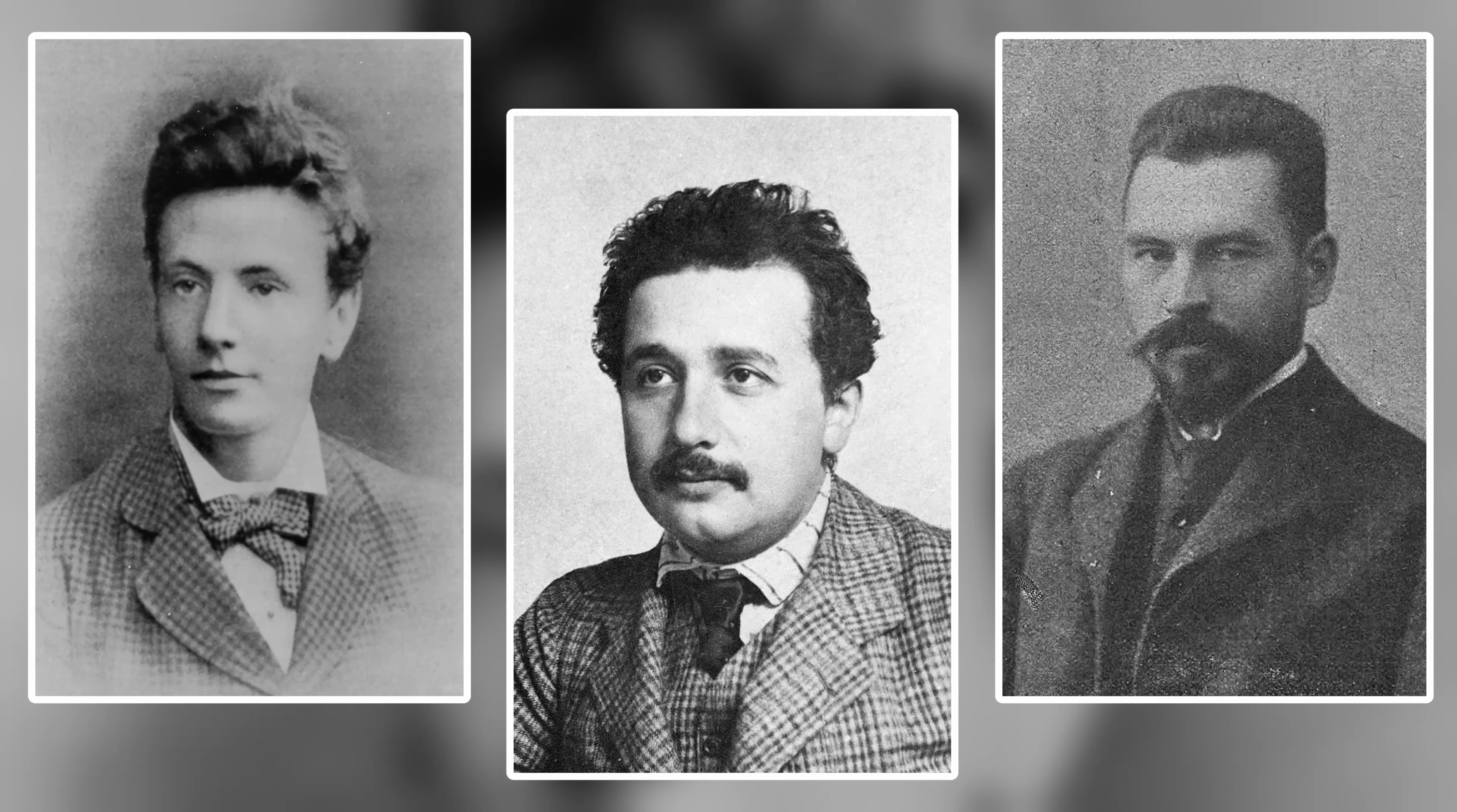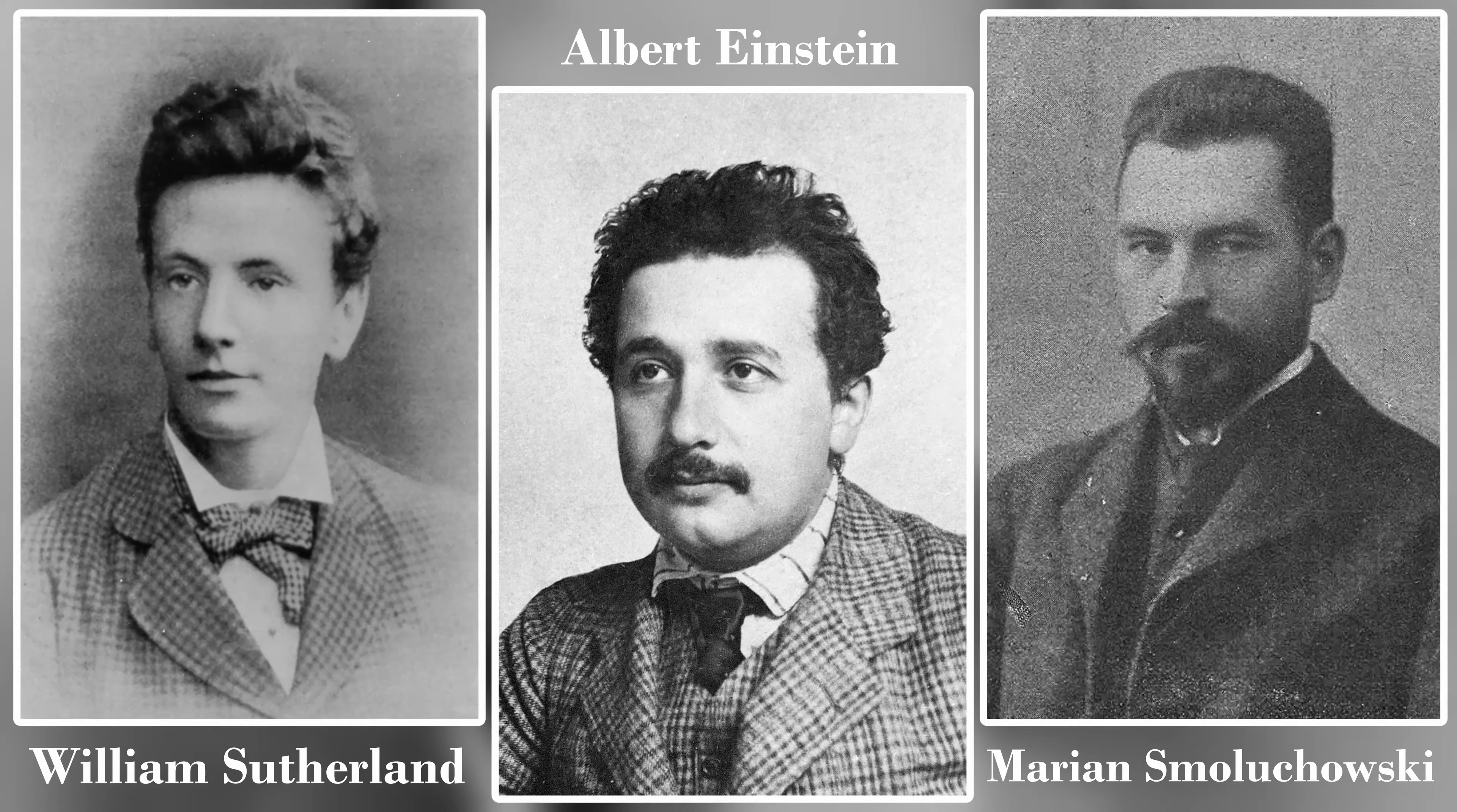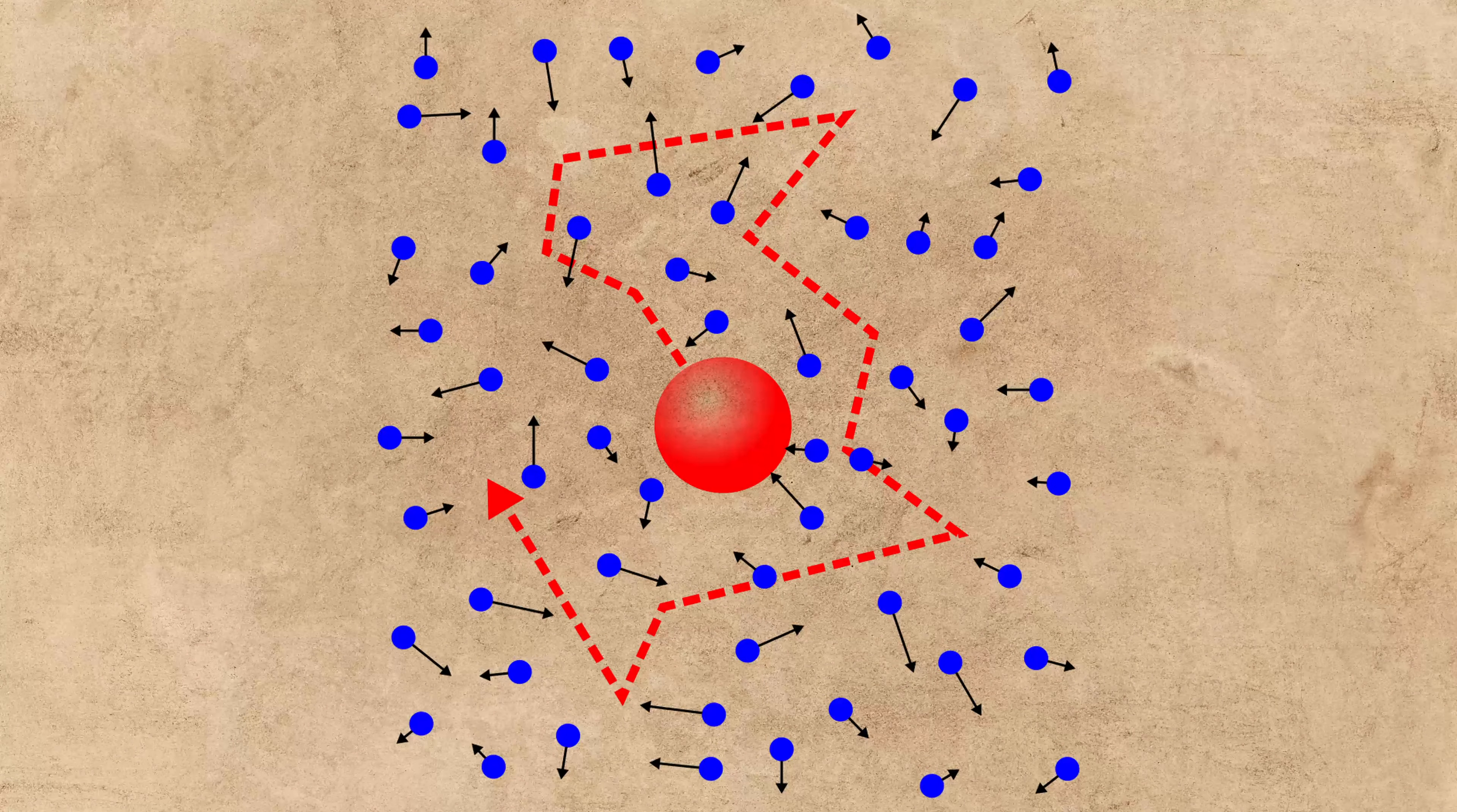Attempts to explain the phenomenon were made independently by three scientists: William Sutherland in 1904, Albert Einstein in 1905, and Marian Smoluchowski in 1906. In their papers, they suggested that Brownian motion was a result of unseen water molecules colliding with these larger particles and pushing them around in the solution they were in.